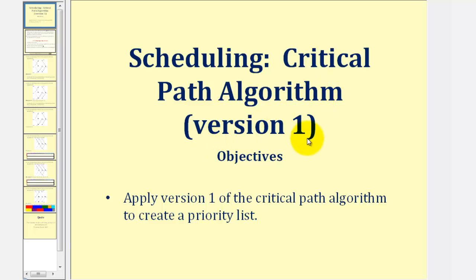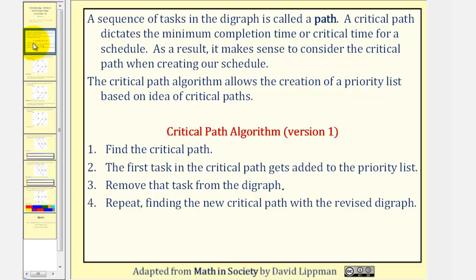Welcome to the first lesson on version one of the Critical Path Algorithm. In this lesson, we'll apply version one of the Critical Path Algorithm to create a priority list. A sequence of tasks in the digraph is called a path. A critical path dictates the minimum completion time, or critical time, for a schedule. As a result, it makes sense to consider the critical path when creating our schedule. The Critical Path Algorithm allows the creation of a priority list based upon the idea of critical paths.